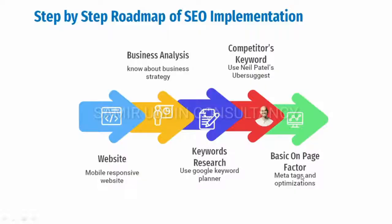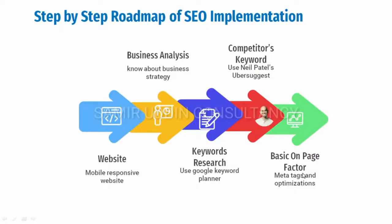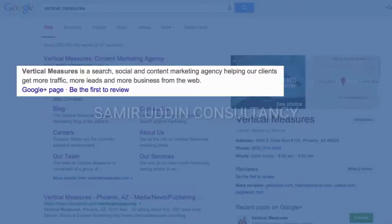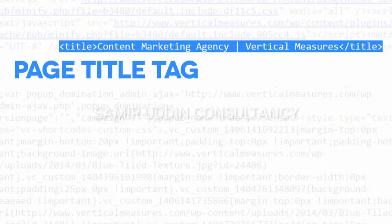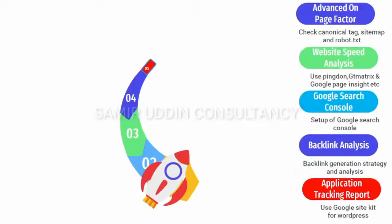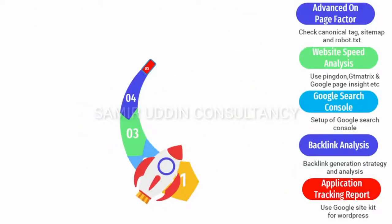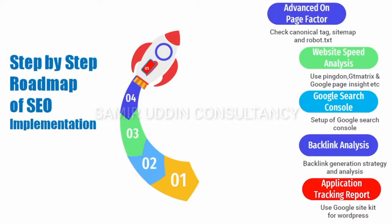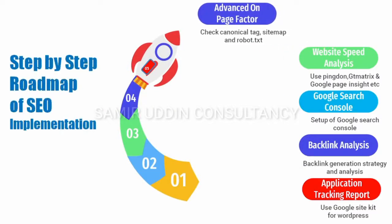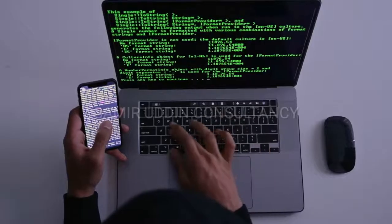The fifth step is on-page factor implementation, including meta tags, URL optimization, heading tag and content optimization, alt tags, and many more. We will learn these in our practical video series. Then we need to do some advanced on-page SEO, in which we will check whether canonical tags, sitemap, and robots.txt are present or not in our web application.